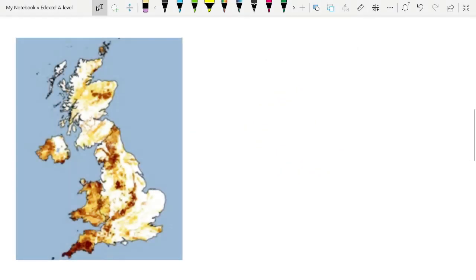Radon gas being one of the main sources of background radiation, this is just a map of the UK here, and you can see that the darker areas are the areas with high concentrations of radon gas. Cornwall in particular, down here in the bottom left.